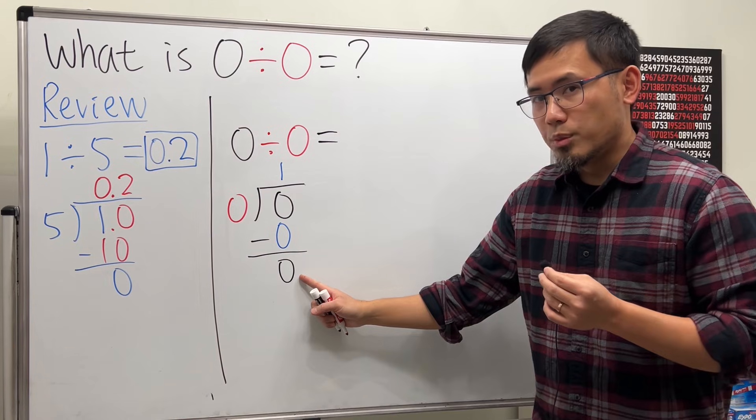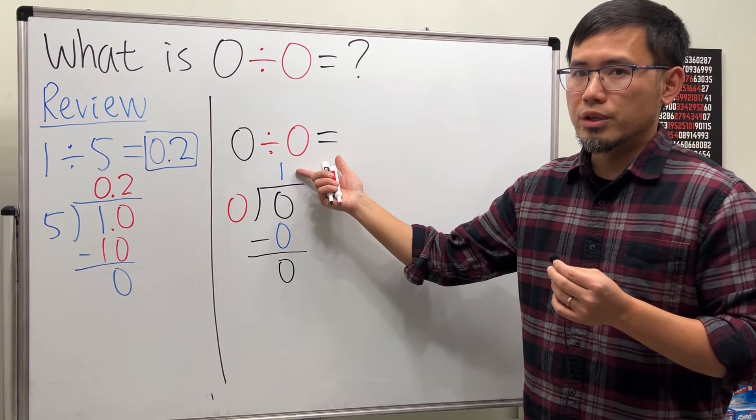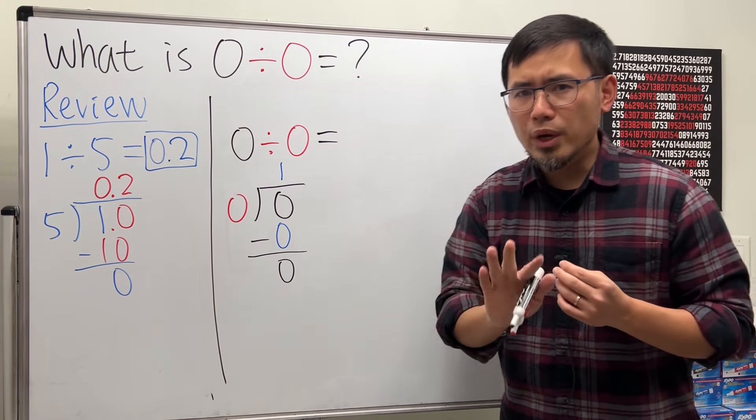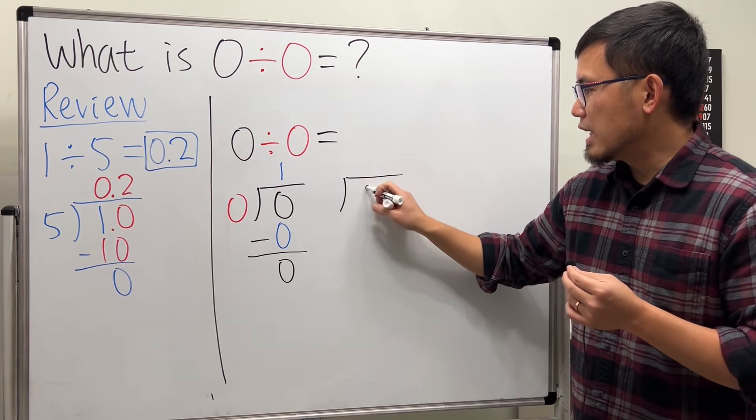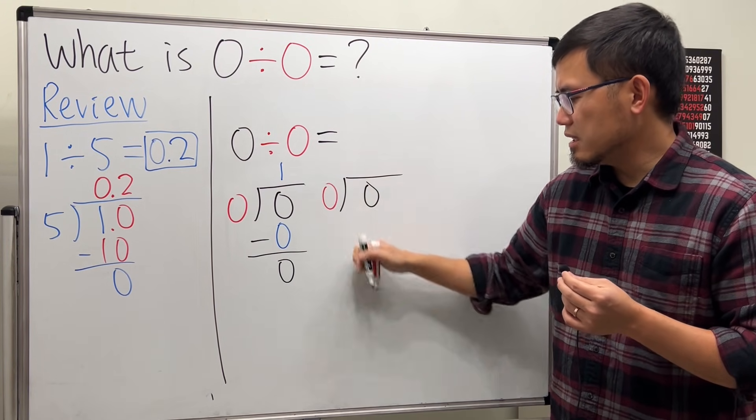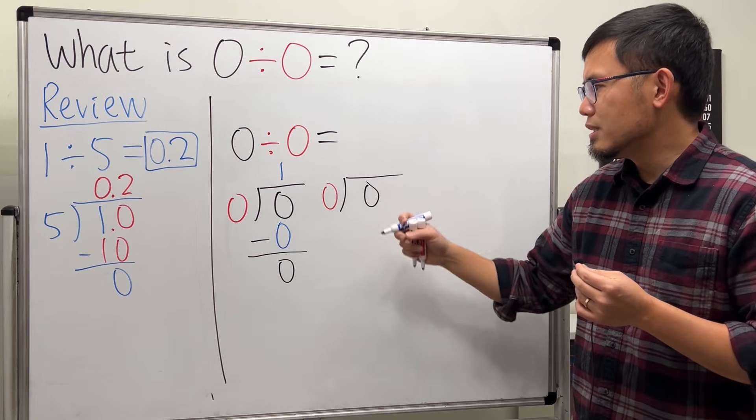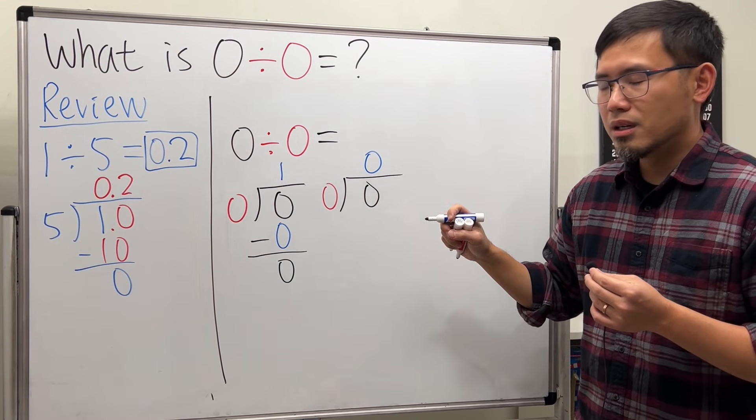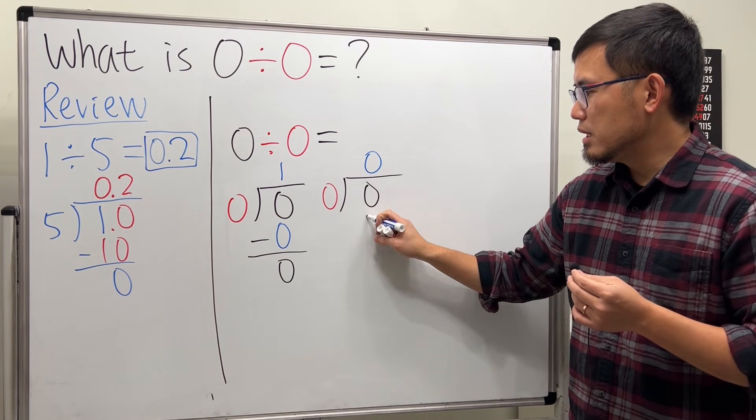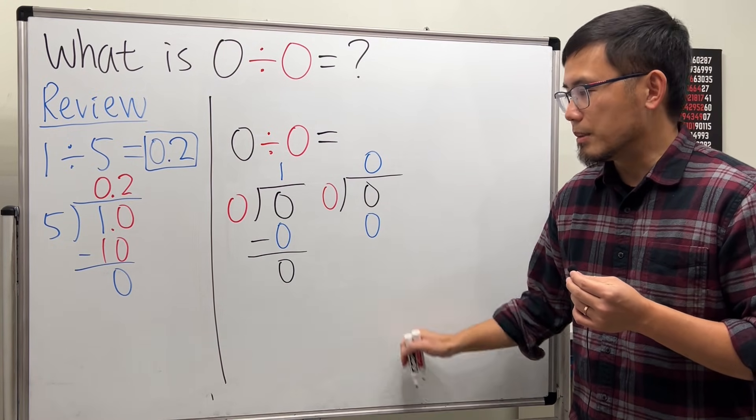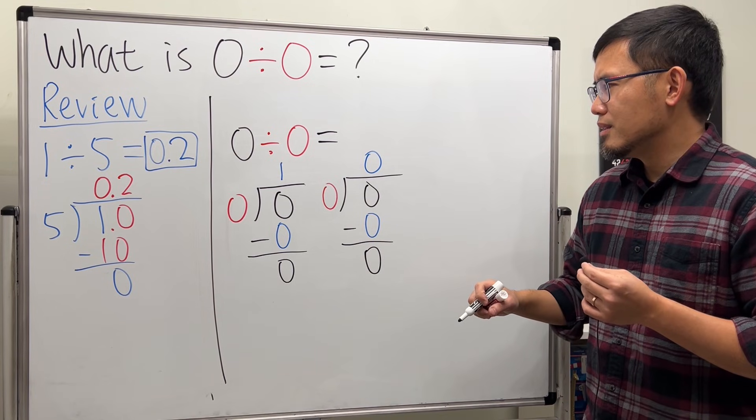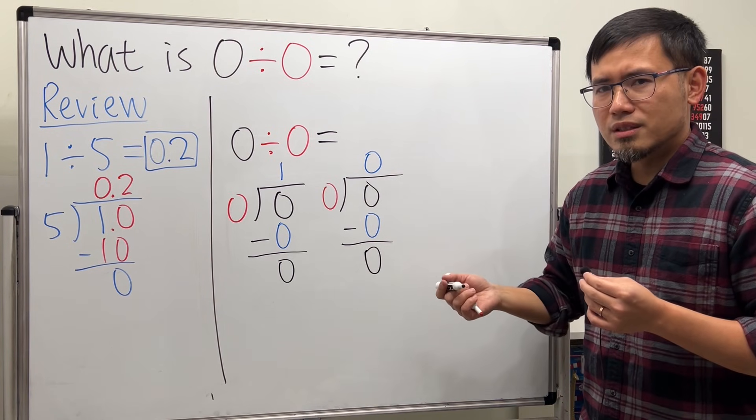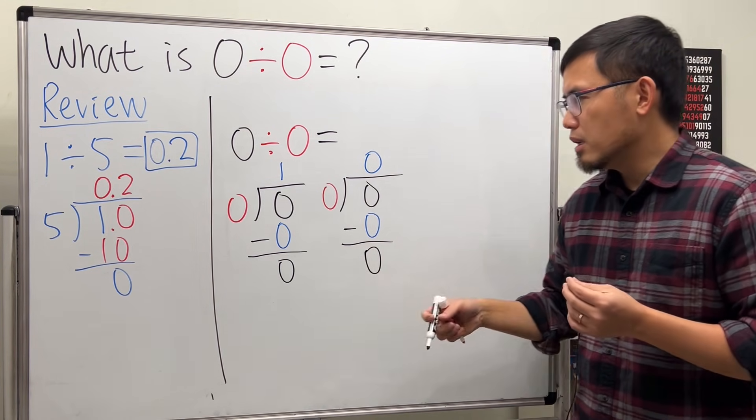Huh, because the remainder is zero, that means this right here has to be the answer. But wait, what if we do this? What if we do this again: zero inside and this zero on the outside, but what if you put zero here? Zero times zero, yes it's zero. And then if we subtract, we get zero.